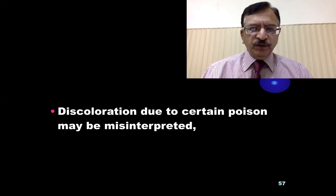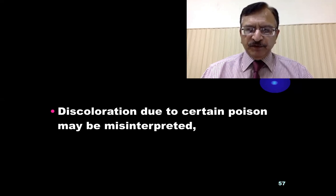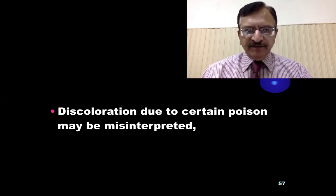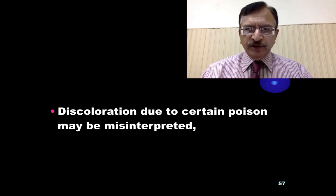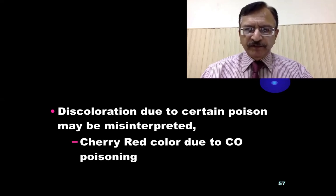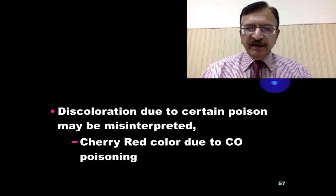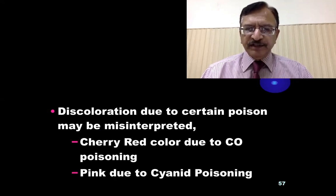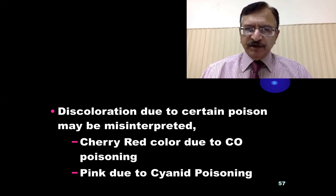Discoloration due to poison may be misinterpreted because certain poisons cause changes in the color of post-mortem staining, and that discoloration can be misinterpreted as normal physiological phenomena. For example, cherry red color due to carbon monoxide poisoning, and pink color due to cyanide poisoning — these colors are due to poisoning, not normal post-mortem staining.